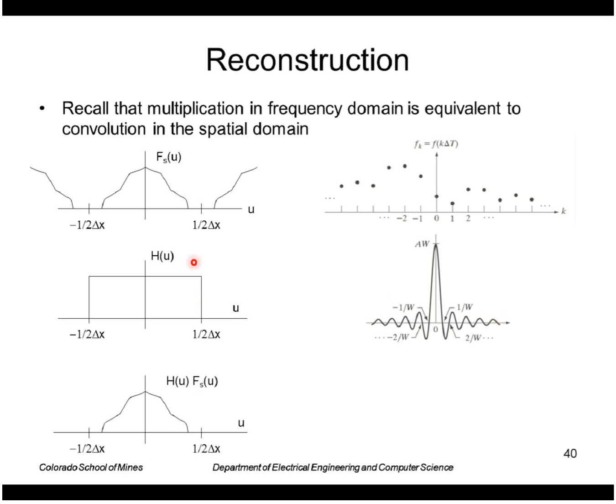Multiplying these two point by point to reconstruct the original is equivalent to convolving the sinc function with our set of samples. If we were to do that in the spatial domain with convolution we would get back our original image.